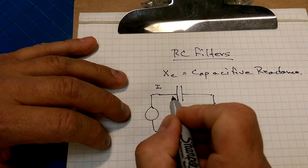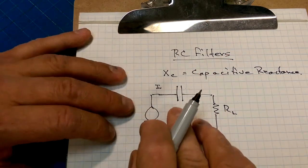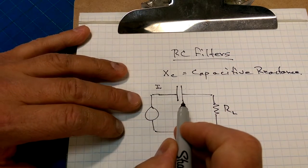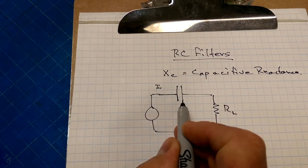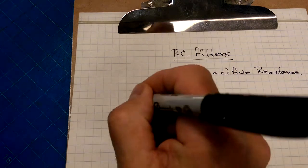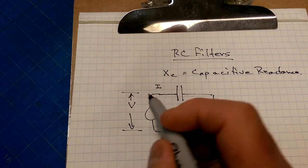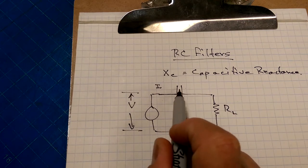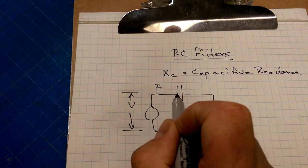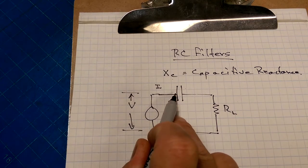Initially there will be a bit of current flowing here. The charges will build up on the plates, and then it'll get to a point where the capacitor can't hold any more charge. Unless the voltage potential between these two points is greater than the breakdown voltage of this capacitor, where it starts to arc over and conduct, then no more current will flow.